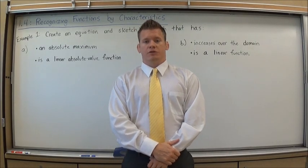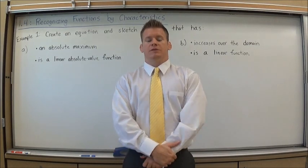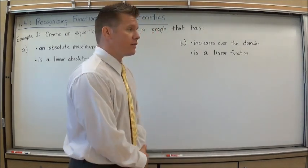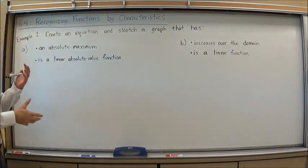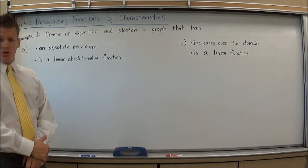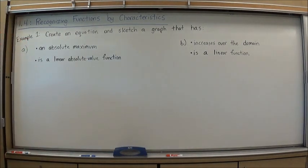Hi, I'm Mr. Richman, and this is your section 1.4 lesson summary. This is the last section in our first unit before the first unit test. In this lesson, we're bringing everything we've learned in the last three sections together. For this video, I'm going to show you two examples of questions you might see on tests that will summarize everything we've been doing in this unit. For the first example, it says create an equation and sketch a graph that has an absolute maximum and is a linear absolute value function.